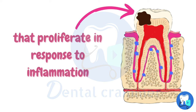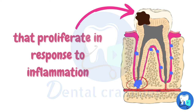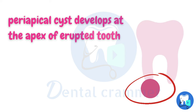Necrosis of tooth causes activation of rests of molasses, as a result of which they gather around the apex of the tooth. The innermost cells are deprived of nutrition, resulting in formation of a cyst which is lined by epithelium.